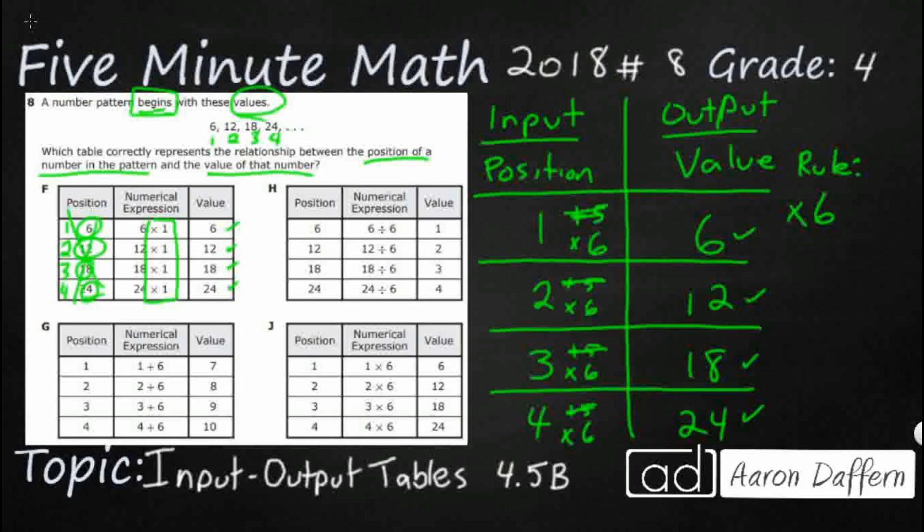So G has the correct positions. We've got 1, 2, 3, 4, just like we do. Yes.